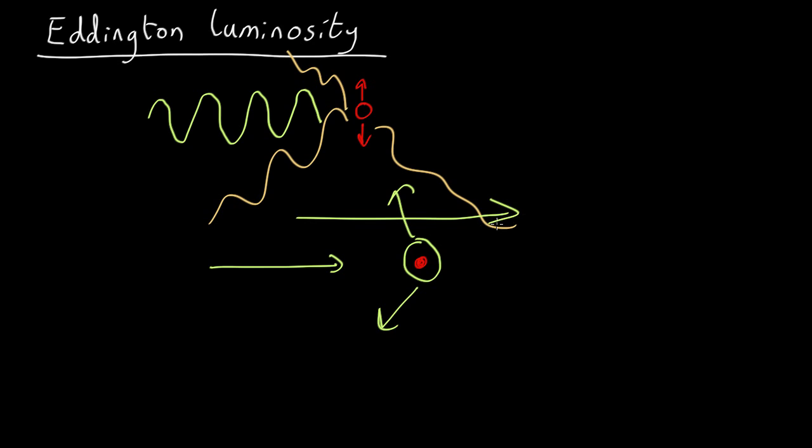This cross-sectional area is called the Thompson cross-section and is a whopping 6.7 by 10 to the minus 29 square meters for an electron.